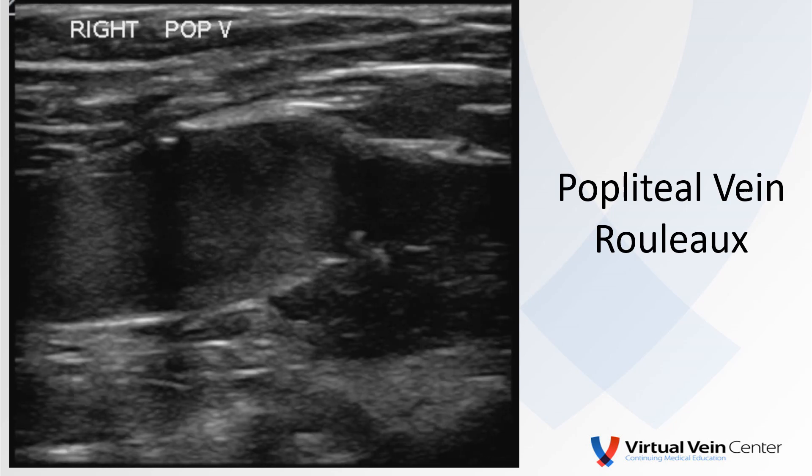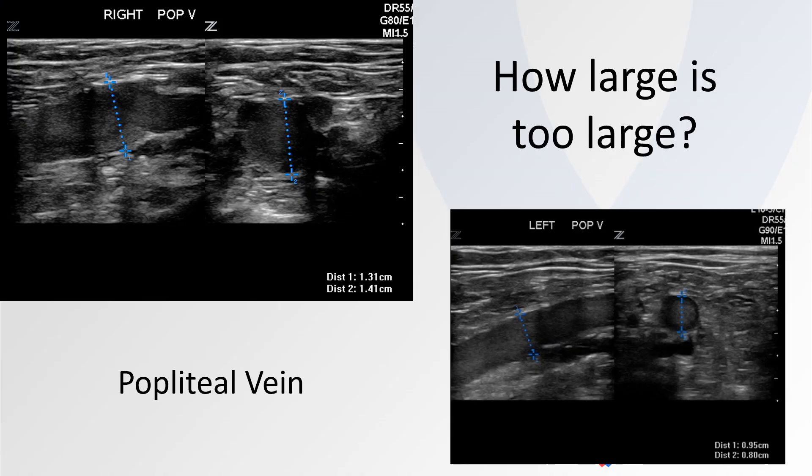So would you classify this as aneurysmal? Is that a venous aneurysm? Well, the definition of venous aneurysm is somewhat controversial. I've heard it expressed as similar to an arterial aneurysm — that is, one and a half times the adjacent segment — and this may fit with that. However, I've also seen valve sinuses that probably result in a one-and-a-half times dilatation compared to the adjacent segment, and you certainly wouldn't want to hang a diagnosis on a patient with a prominent valve sinus. We can compare to the contralateral leg, and in this case it's certainly one and a half times the contralateral side, but I'm not sure I would classify this as an aneurysm.